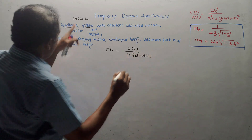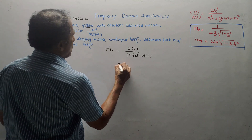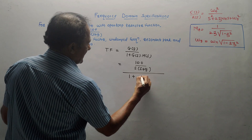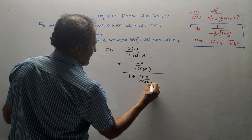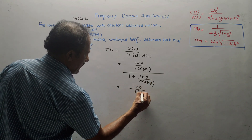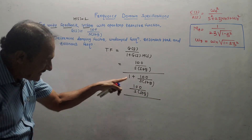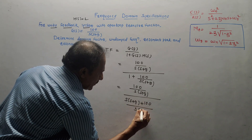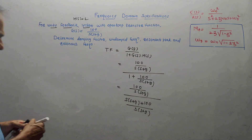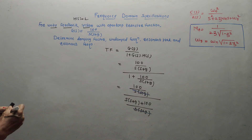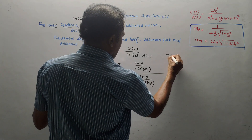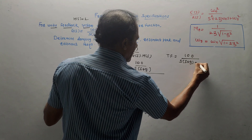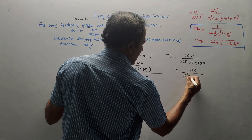First task is to calculate the closed-loop transfer function, which is G(s) upon 1 + G(s)·H(s). Since unity feedback, H(s) = 1. Putting the value of G(s): it is [100 / s(s+9)] divided by [1 + 100/s(s+9)]. Taking LCM in the denominator: numerator stays 100/s(s+9), denominator becomes [s(s+9) + 100] / s(s+9). The s(s+9) terms cancel, giving transfer function = 100 upon s² + 9s + 100.